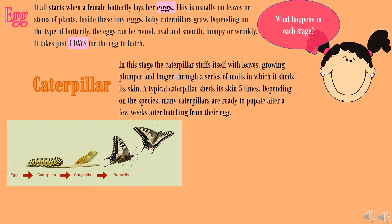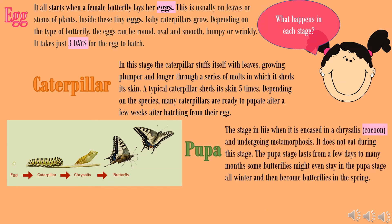The pupa stage is the stage in life when the caterpillar is encased in a cocoon and undergoing metamorphosis. It does not eat during this stage. The pupa stage lasts from a few days to many months. Some butterflies might even stay in the pupa stage all winter and then become butterflies in the spring.